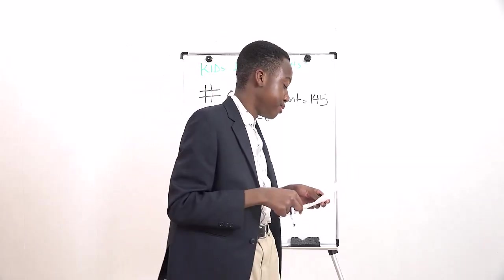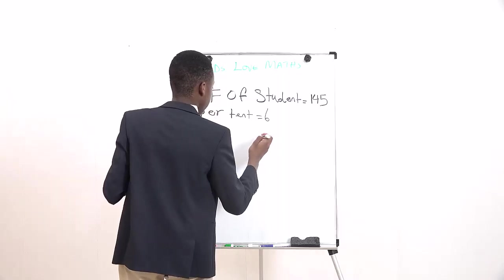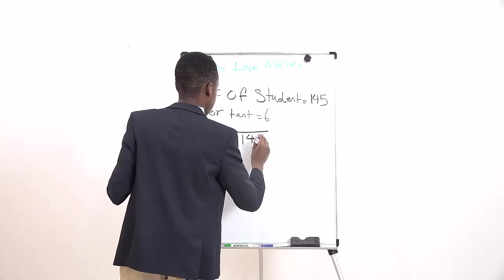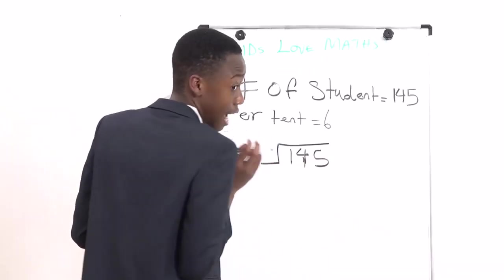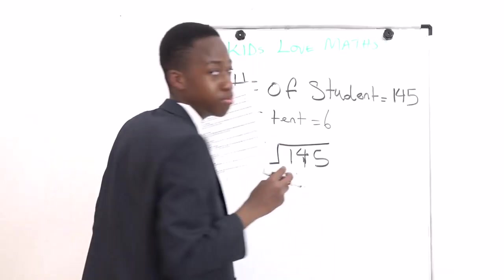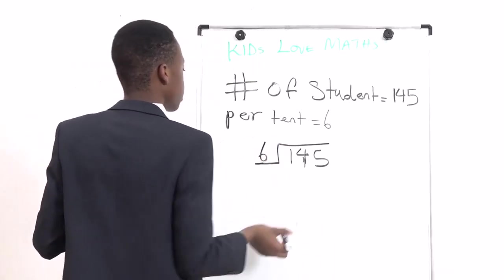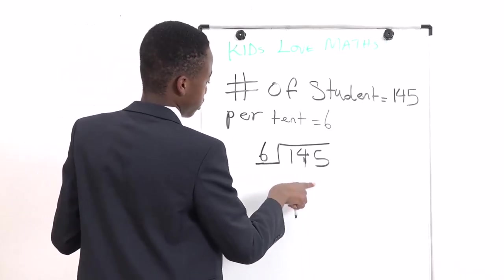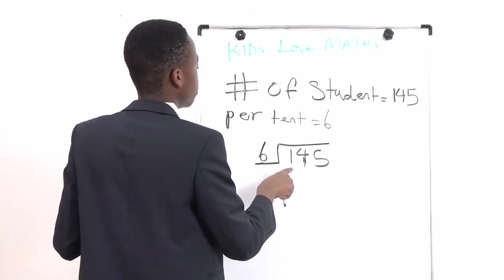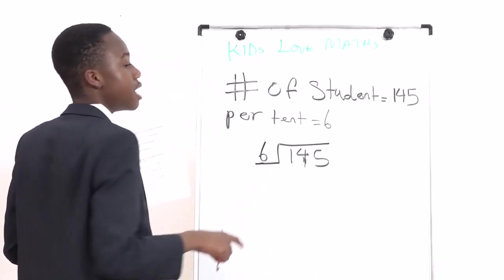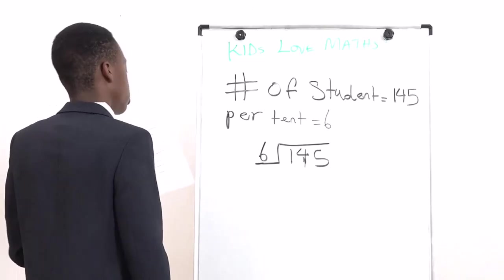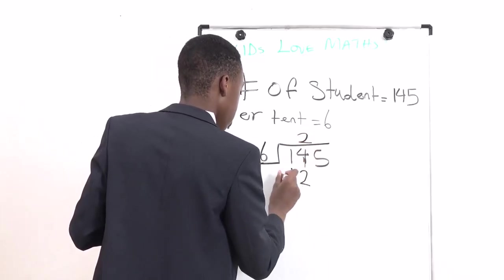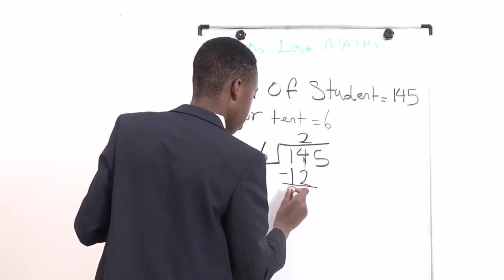Thanks to long division again, we write our question: 145 as the bigger number inside, and 6 comes out. We do 1 divided by 6, cannot go. Thank goodness there's another number after it. So we can use 14 divided by 6, and what's the closest number to 14? 2. So we do 2 times 6 equals 12.